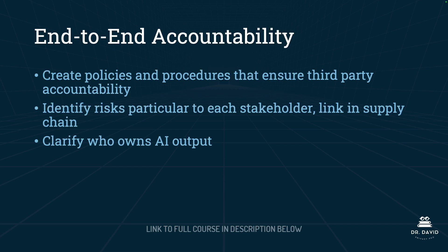End-to-end accountability means that your organization and governance body have created policies and procedures that ensure third-party accountability. You want to identify risks that are particular to each stakeholder and each link in the supply chain, especially when working with vendors and third parties outside of the organization. Finally, clarifying who owns the AI output.